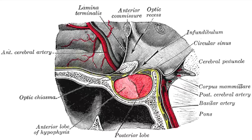Define hemianopia. Hemianopia is the blindness in one half of the visual field.